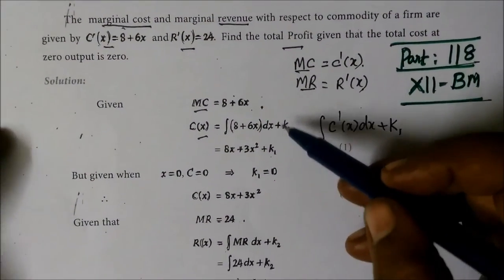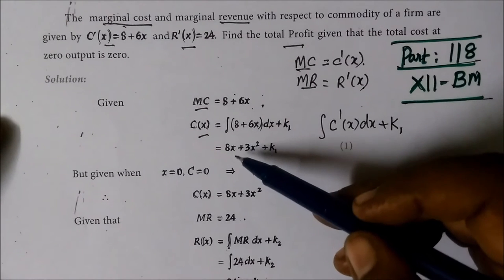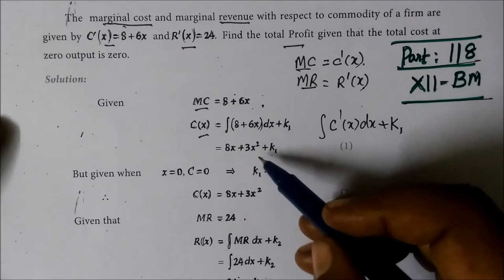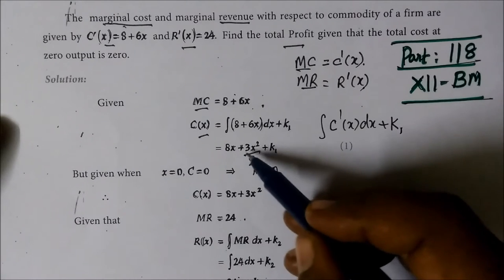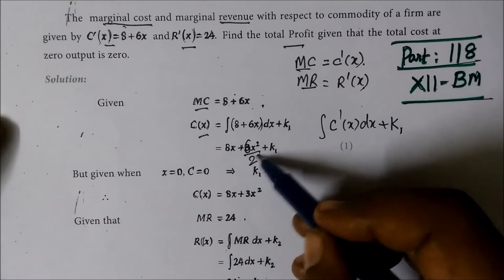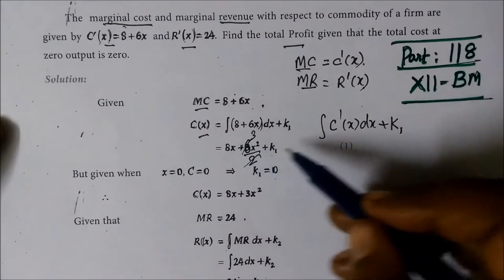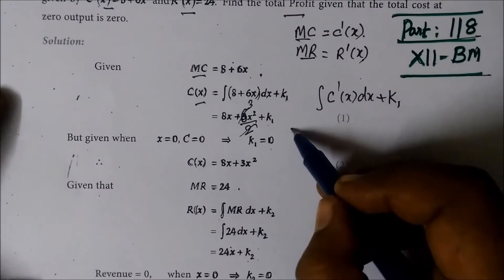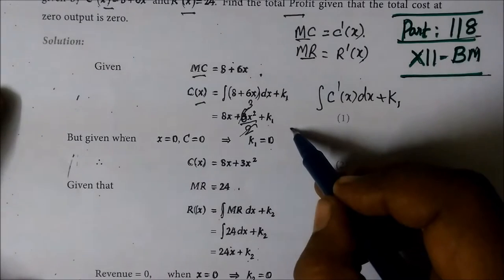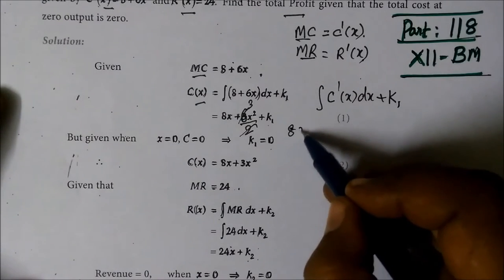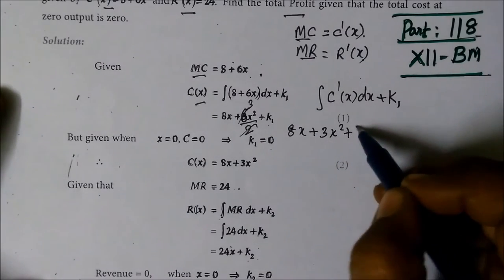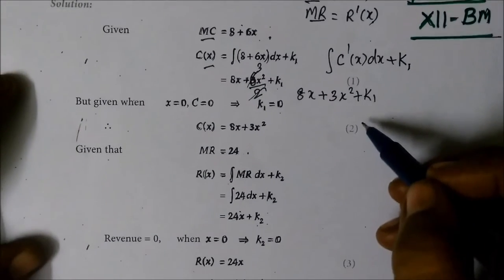That value is constant x. Then x squared by 2, by 2. 6, so this is cancelled, it is 3. So 8x or 8x, so 8x plus 3x squared plus K₁.